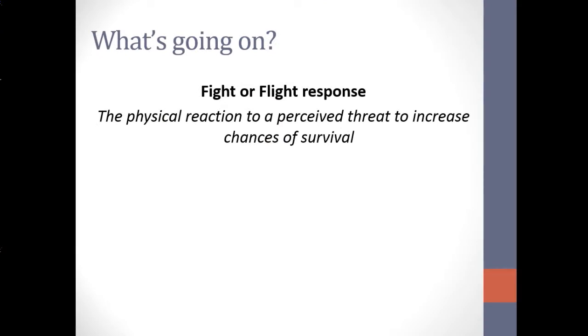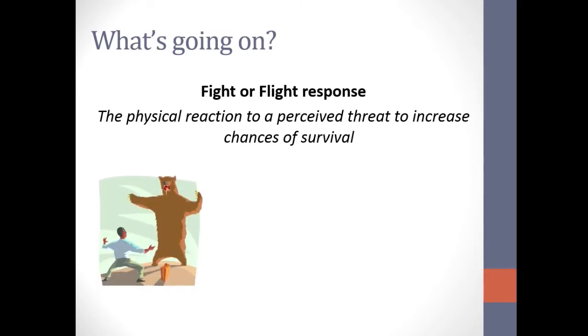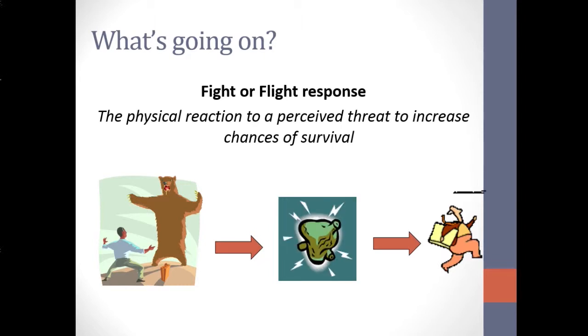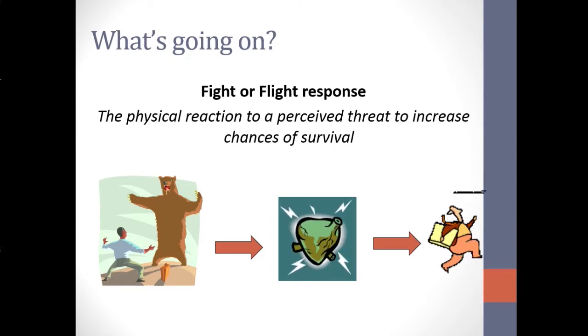When we feel stress, what is really going on is the fight or flight response. This is a physical reaction we have to a perceived threat or stress that increases our chance of survival. Something happens, our body reacts, and we decide if we can fight it or get out of there. Our sympathetic nervous system kicks into high gear — adrenaline is pumping, blood sugar is rising so we get that extra energy, and our pupils are dilating so we can see better. Our body is preparing us to get that energy to help protect and support us.